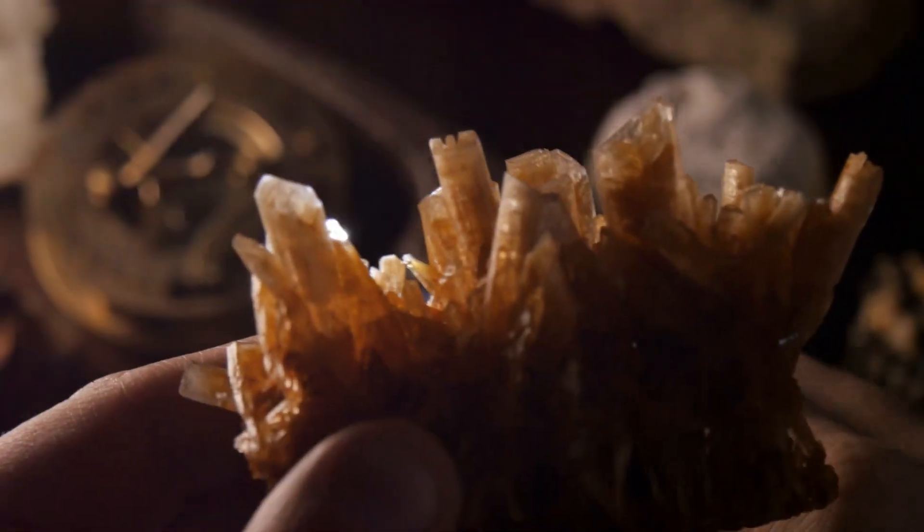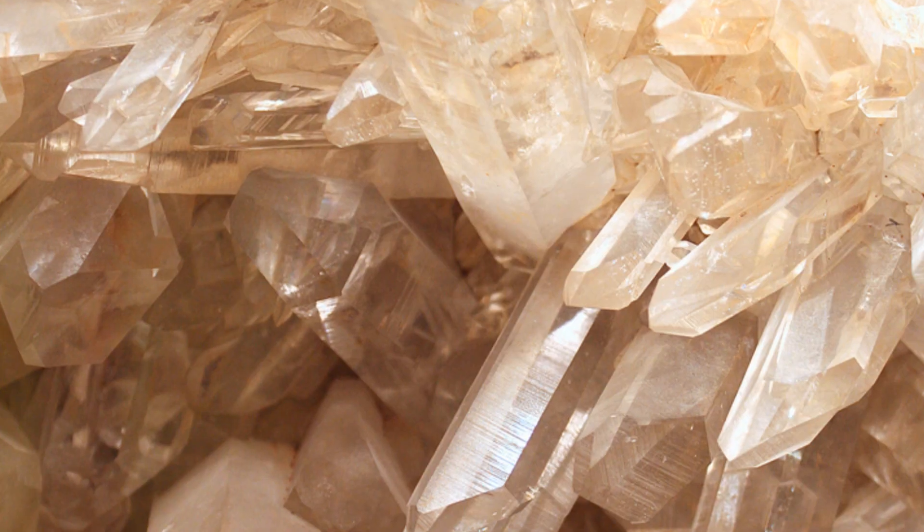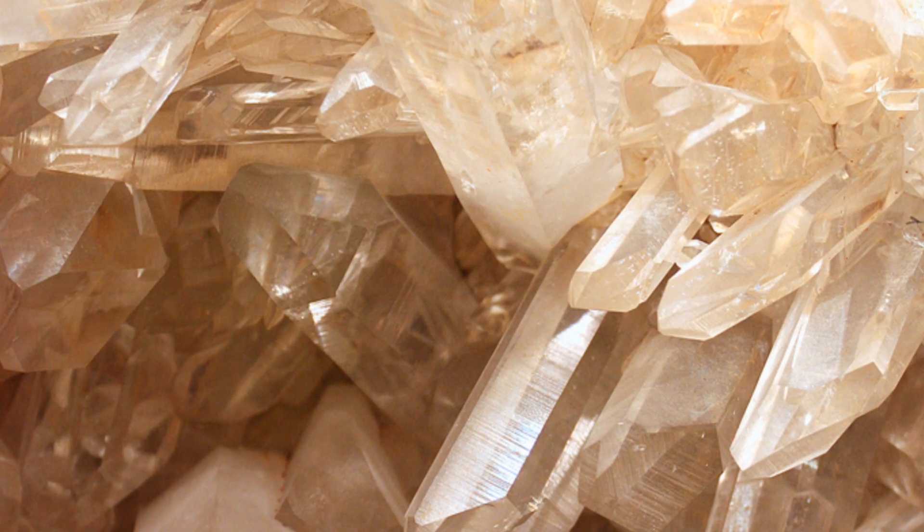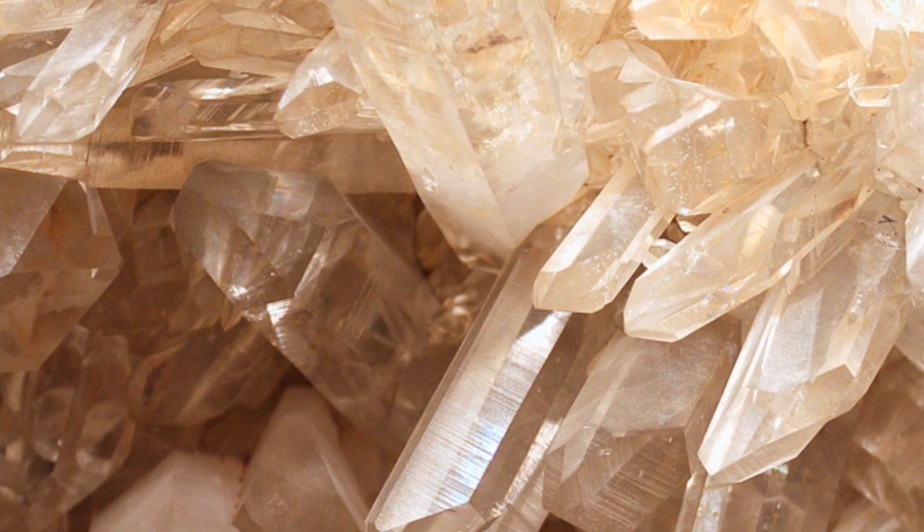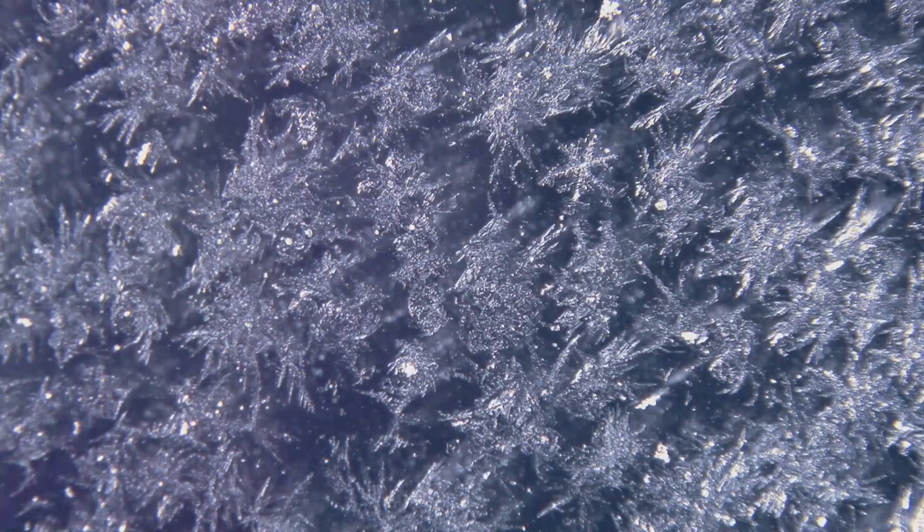Once the seed crystal makes contact with the molten silicon, the magic begins. The seed crystal is slowly withdrawn upwards, but not in haste. This withdrawal is a controlled process, a measured ascent that allows the silicon from the melt to crystallize onto the seed. This crystallization continues the single crystalline structure of the seed, allowing the birth of a new crystal.